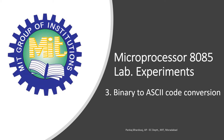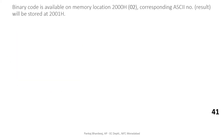We now discuss the next experiment: how to convert a binary number into ASCII code. This is the binary-to-ASCII code conversion experiment. The binary number is available at a memory location, for example 2000, and we need to identify its corresponding ASCII code and store it at memory location 2001.